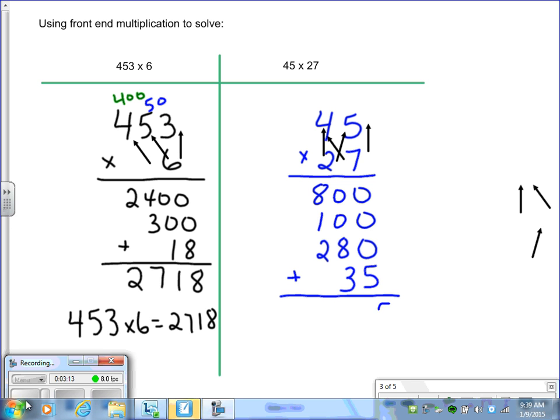Then we take our products and we add them together. And we get a final answer of 1,215.